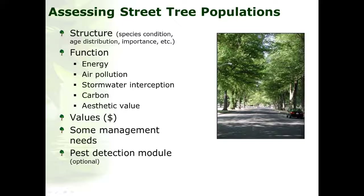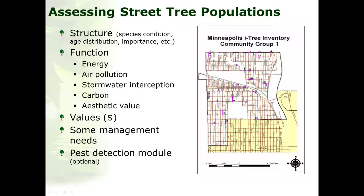If a community has existing tree inventory information, that can typically be reformatted and imported into iTreeStreets. Streets also has two options if you don't have existing data. You can collect a complete tree inventory — collecting all data for all street trees in the right of way. If a community lacks the resources for a complete inventory, you might do a sample inventory by generating random street segments and collecting data for trees within those segments. That data would then be extrapolated to population estimates with a standard error reflecting accuracy.